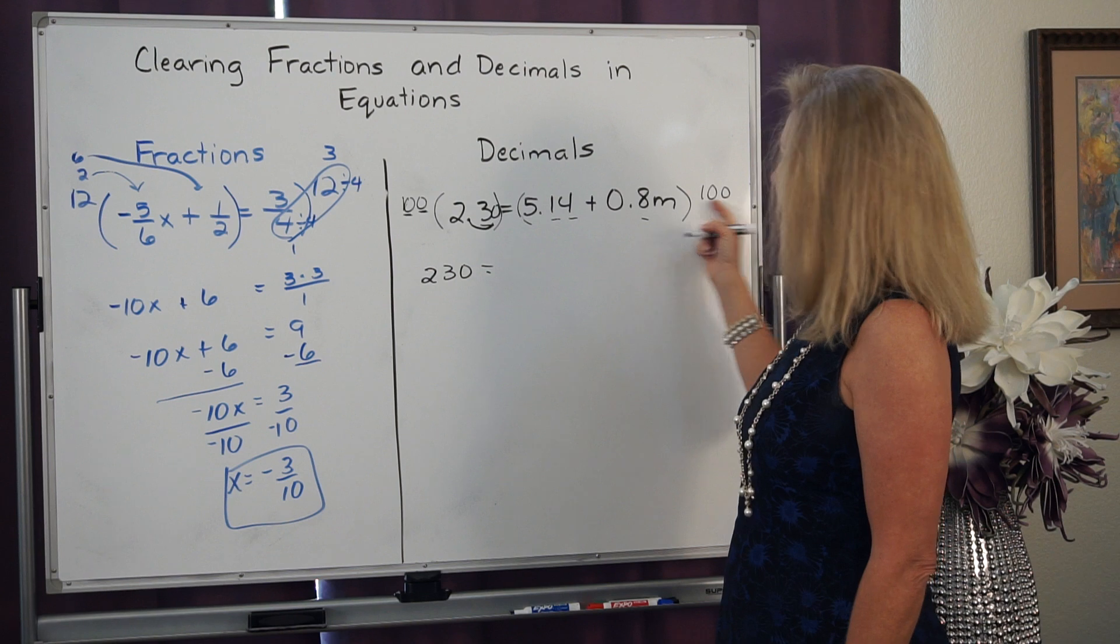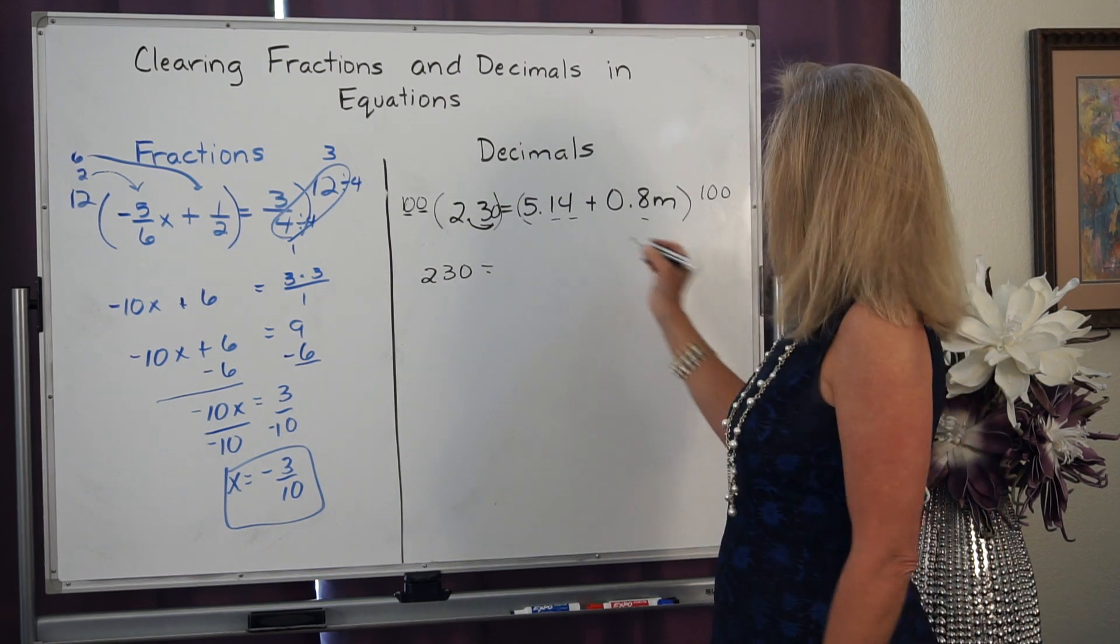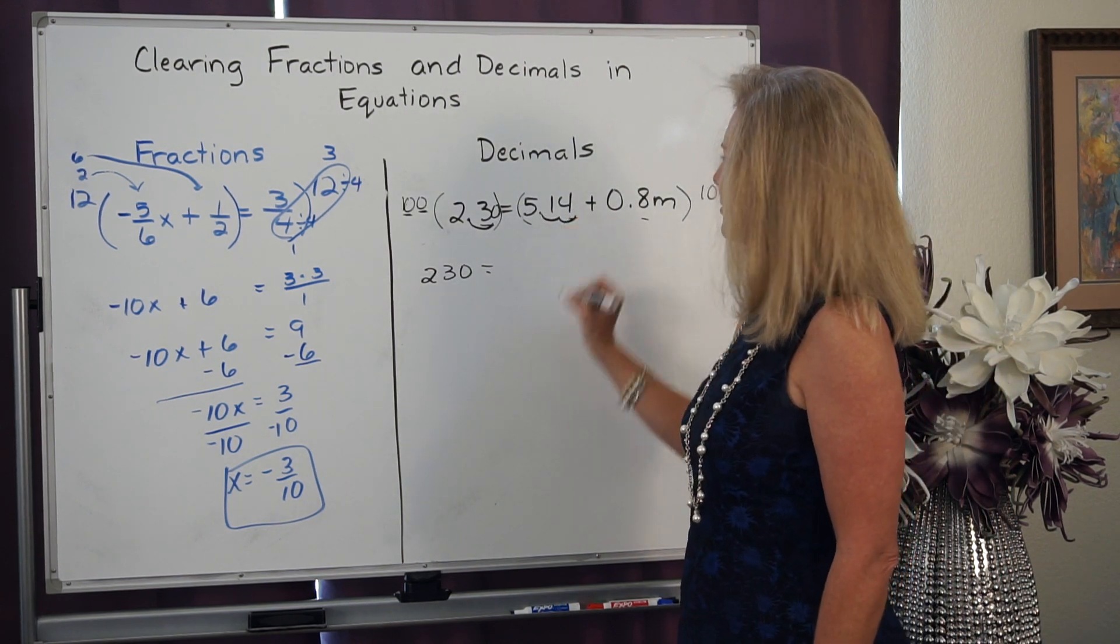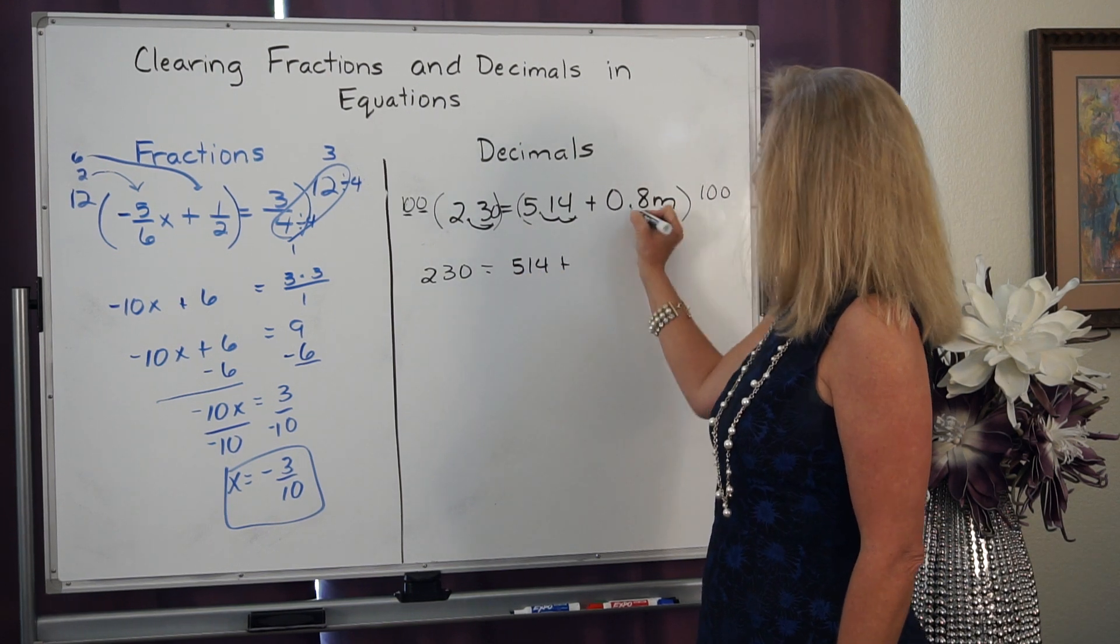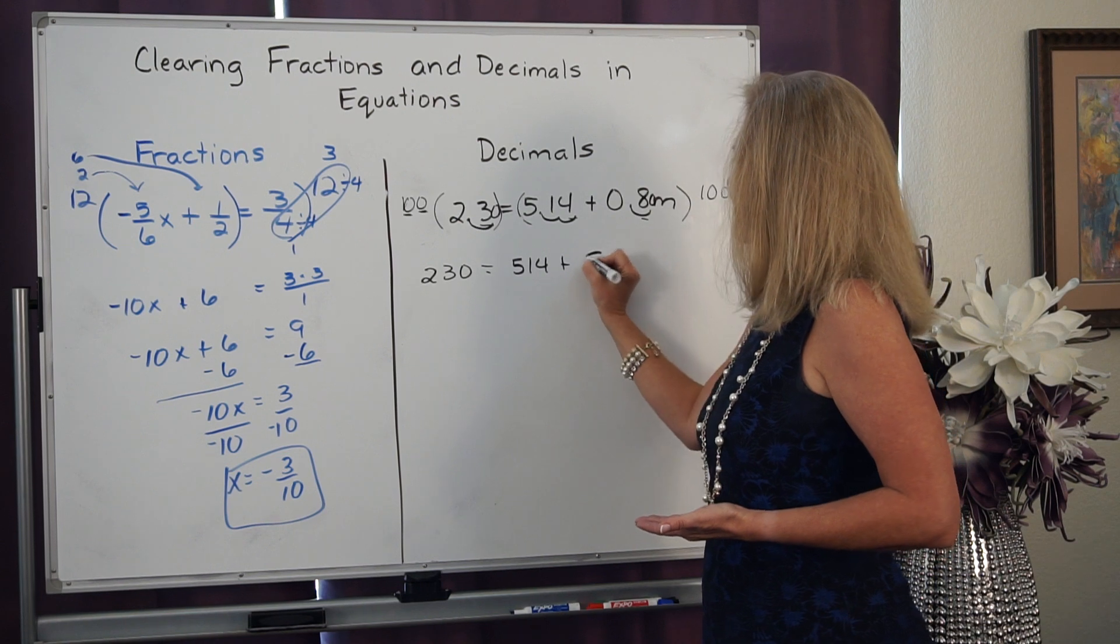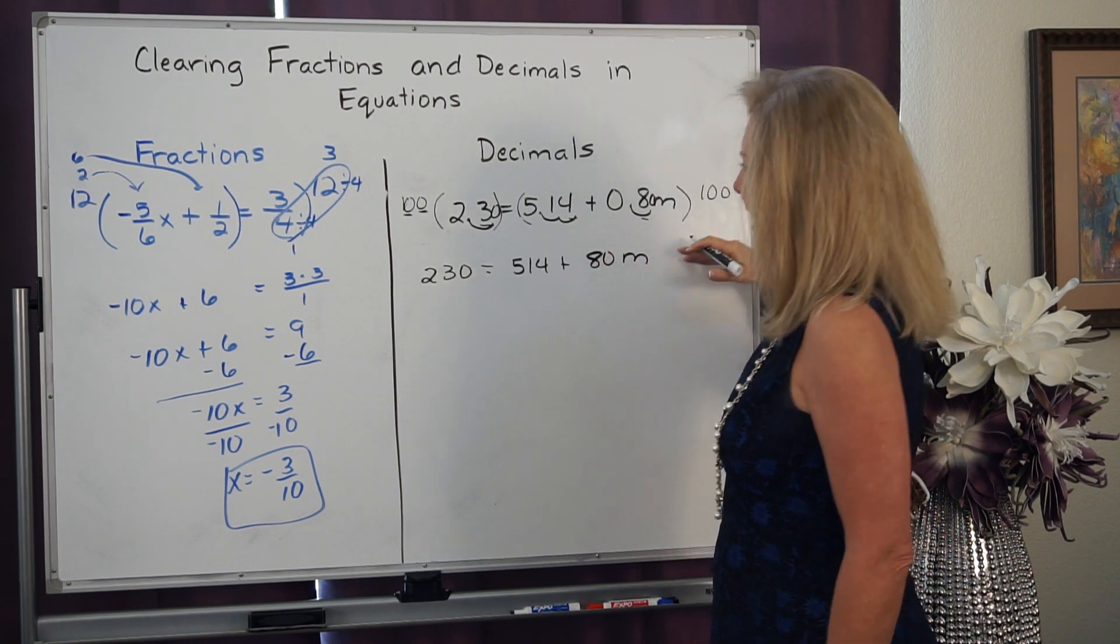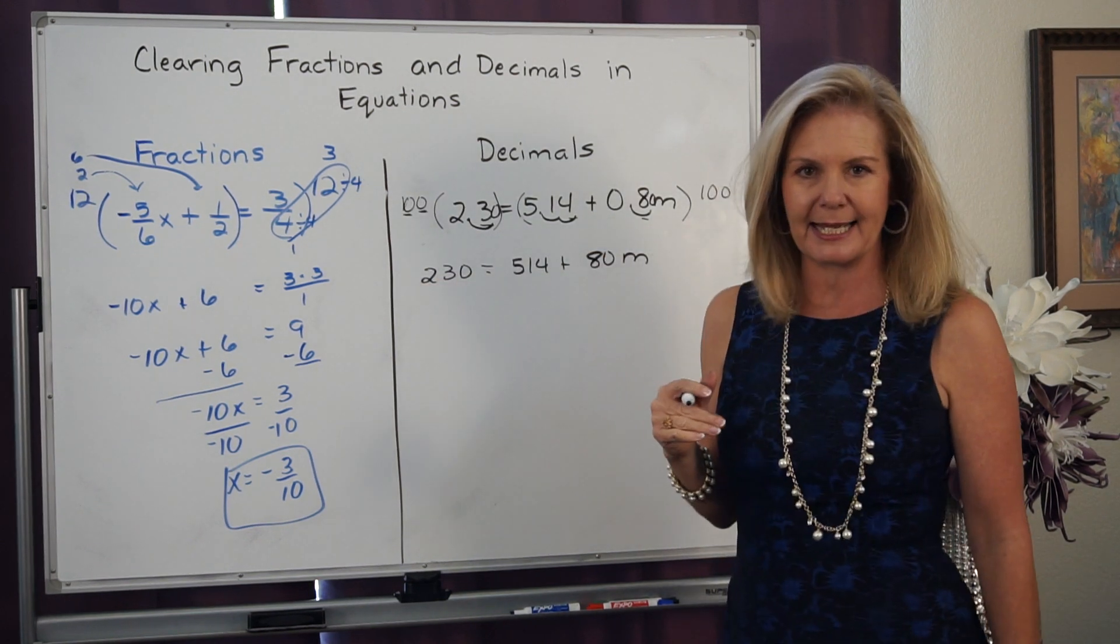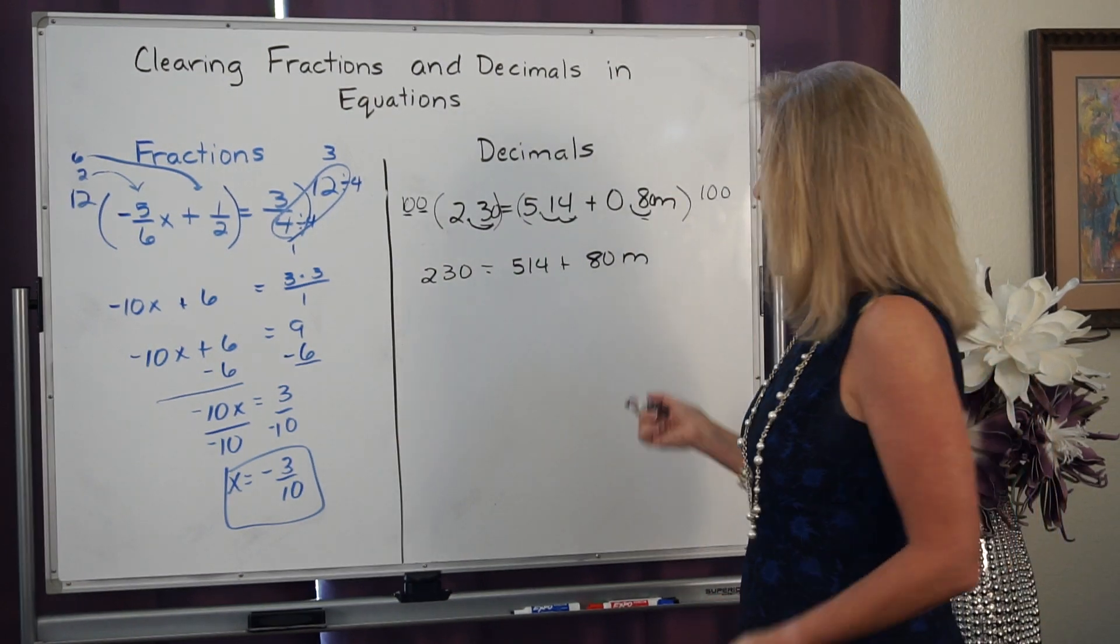Now I'm going to do the same thing for both of these numbers. So I'm going to move this decimal point two places. I get 514. I'm going to move it one. Got to annex a zero. I get 80m. I just cleared all my decimals. So now we're back to a two-step equation.